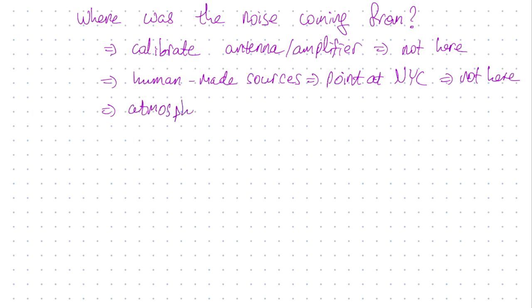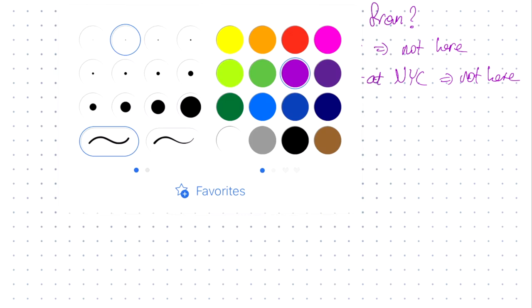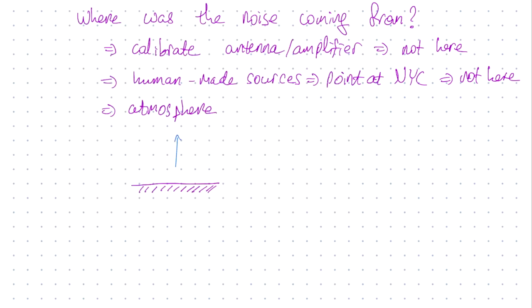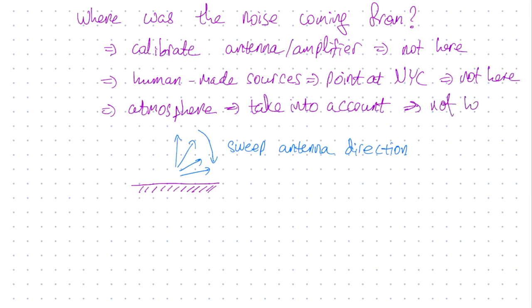Was the noise coming from the atmosphere of the Earth? Well, to try to figure this out, what they did is they took their antenna and pointed it in different directions. So they swept it from being pointed straight up to being pointed towards the horizon. Now the expectation is that as you sweep the direction of the antenna, you see different amounts of atmosphere, and therefore different amounts of noise. They went ahead and took into account this varying amount of noise from the atmosphere, figured out that there still was excess noise.